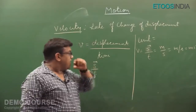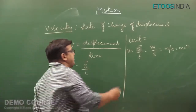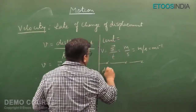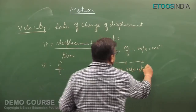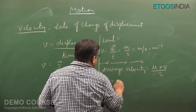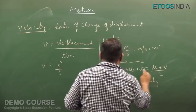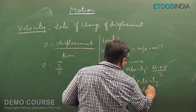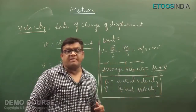I will be telling you about one dimension motion and three dimension motion shortly. First, let me complete this topic. This is velocity, and the average velocity is given by u plus v upon 2, where u is initial velocity and v is final velocity.